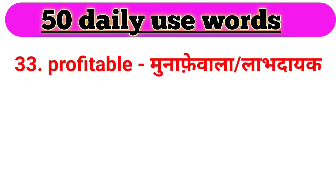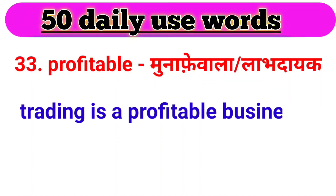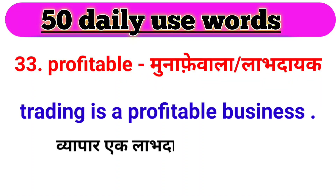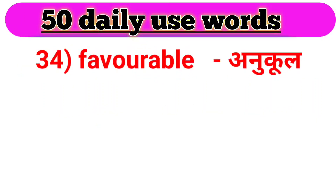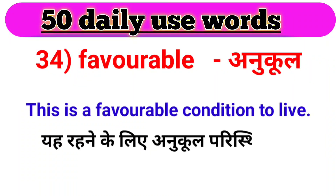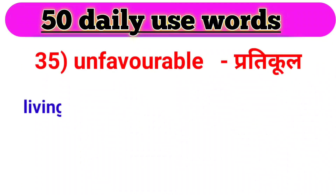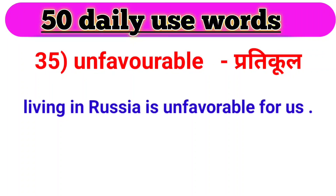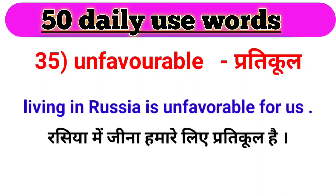Next word, we have profitable. Profitable ka matlab hota hai munafi wala ya labhdayak. For example: Trading is a profitable business. Vyapaar ek labhdayak vyavsaay hai. Next word, we have favorable. Favorable ka matlab hota hai anukool. For example: This is a favorable condition to live. Rehne ke liye anukool paristhiti hai. Agla word hai — unfavorable. Unfavorable ka matlab hota hai pratikool. For example: Living in Russia is unfavorable for us. Russia mein jeena hamare liye pratikool hai.